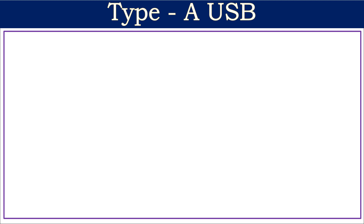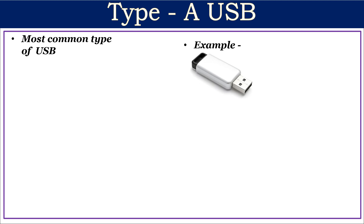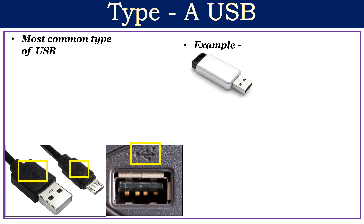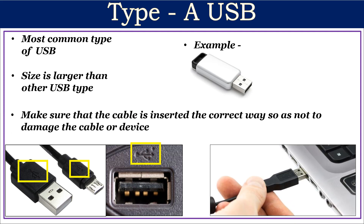Let's begin with Type A USB, which is the most common type. The end of a pen drive which goes into a computer is an example of Type A USB. Type A USB will go into the port one way only. You can usually tell which way is up by the USB symbol printed on the top. The size of Type A USB is larger than other USB types, so make sure the cable is inserted correctly to avoid damage.